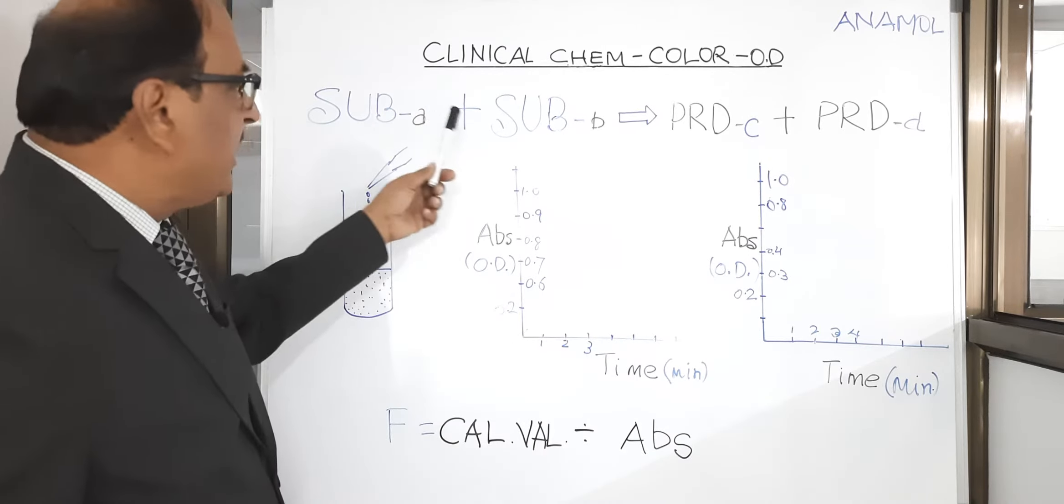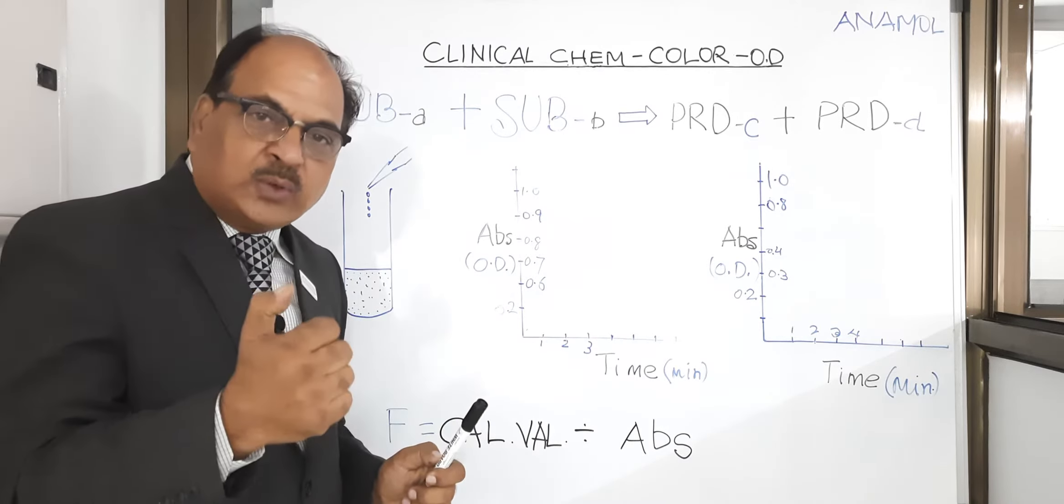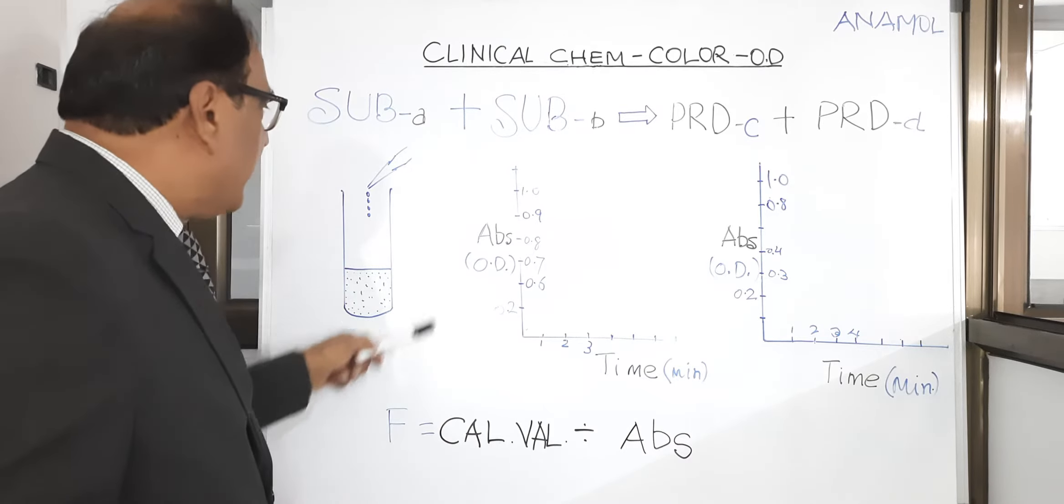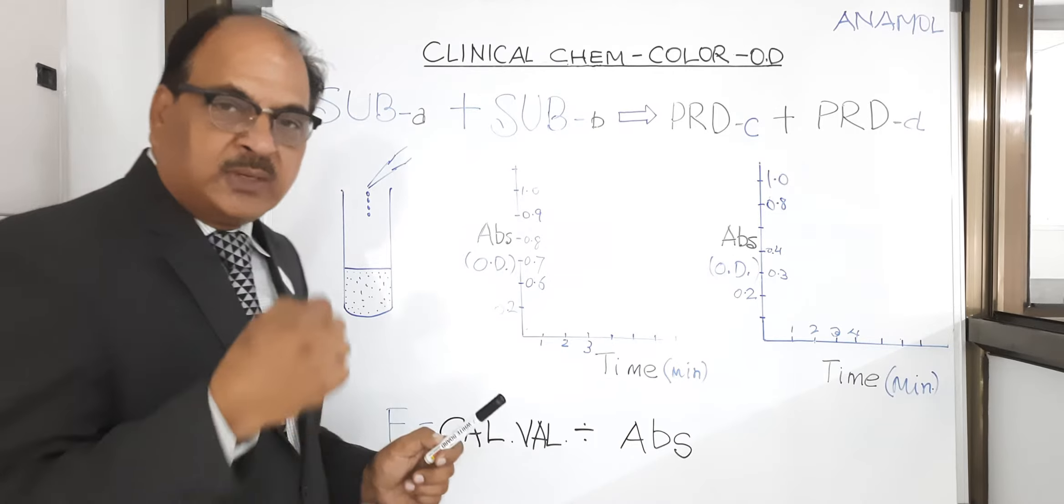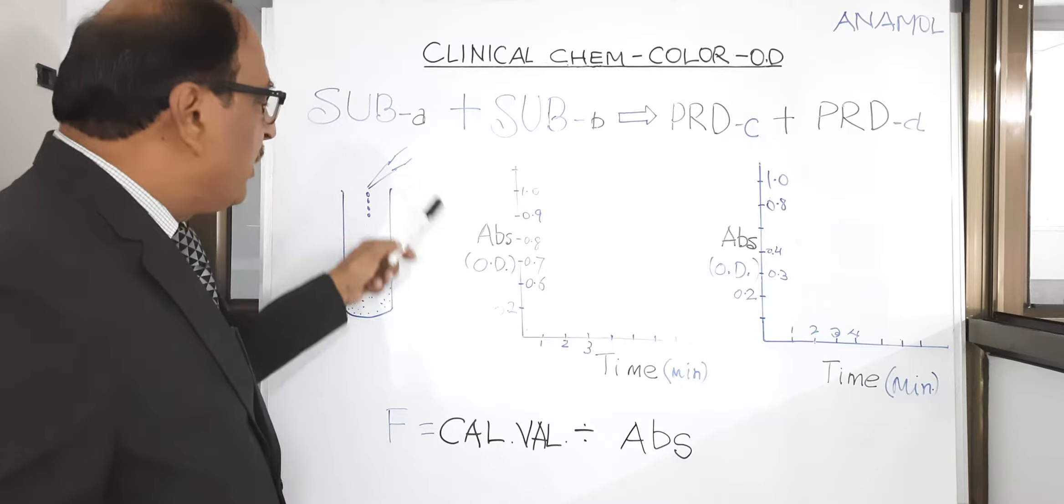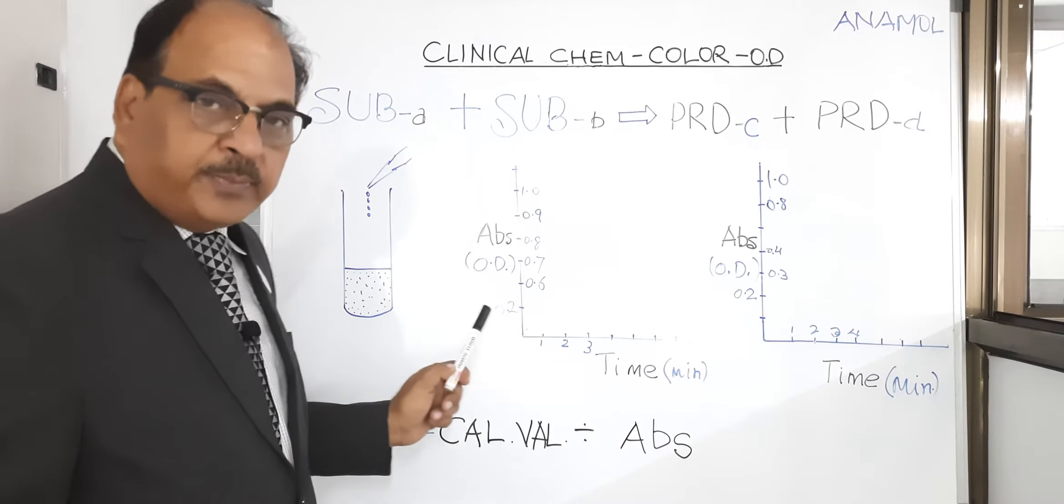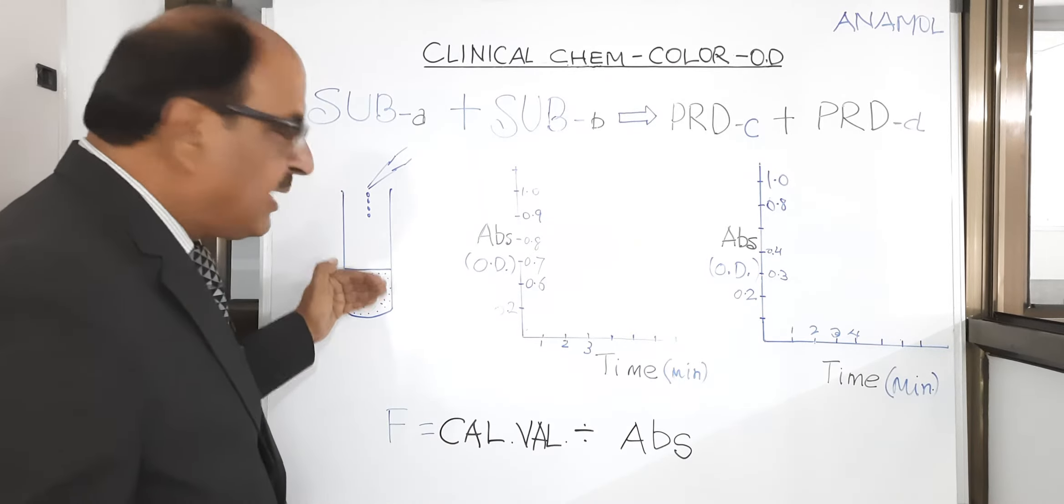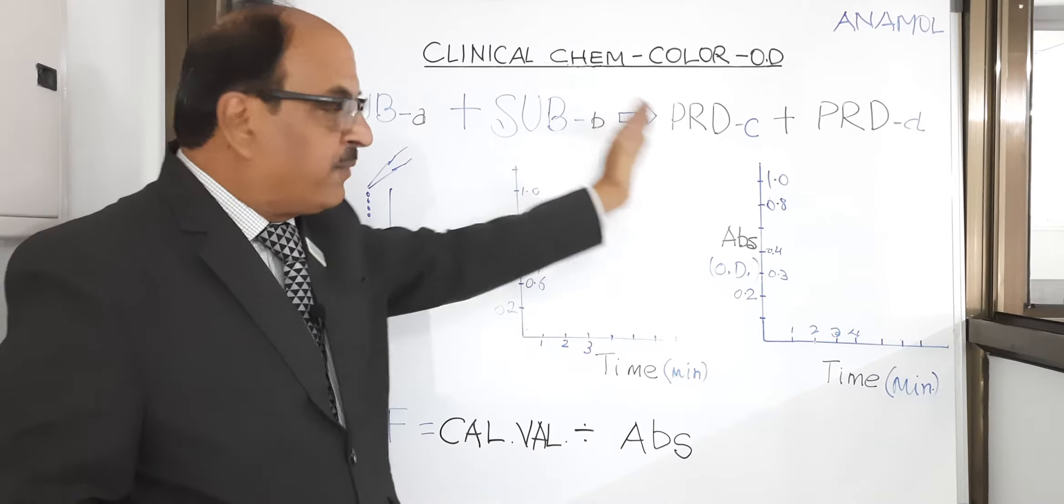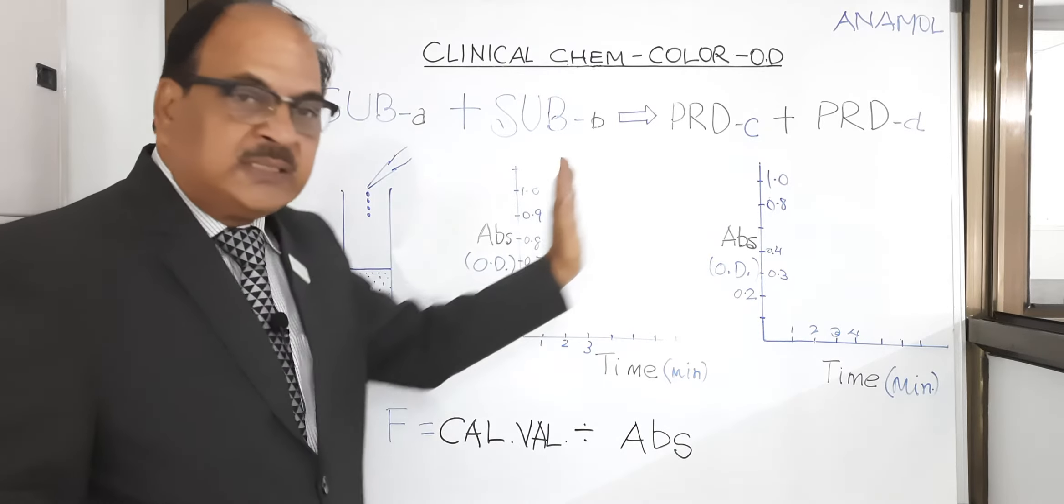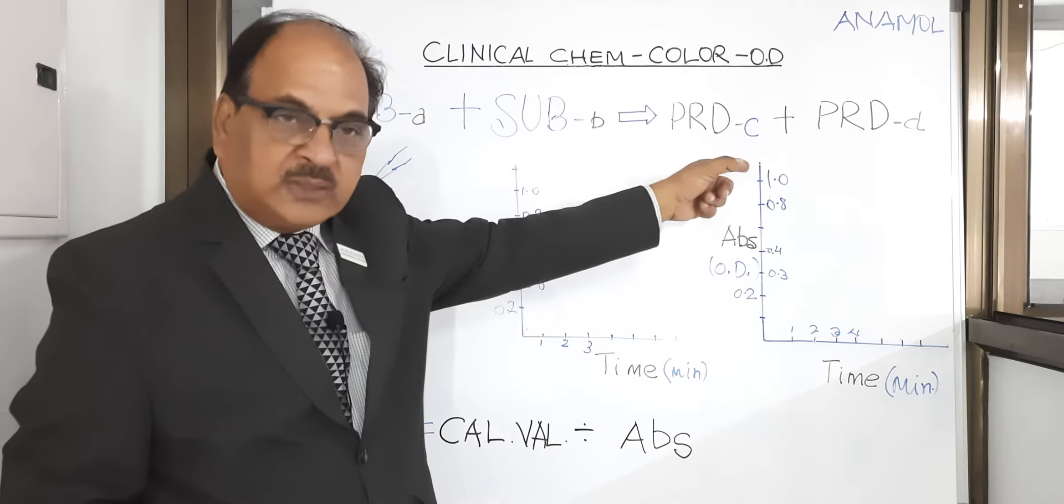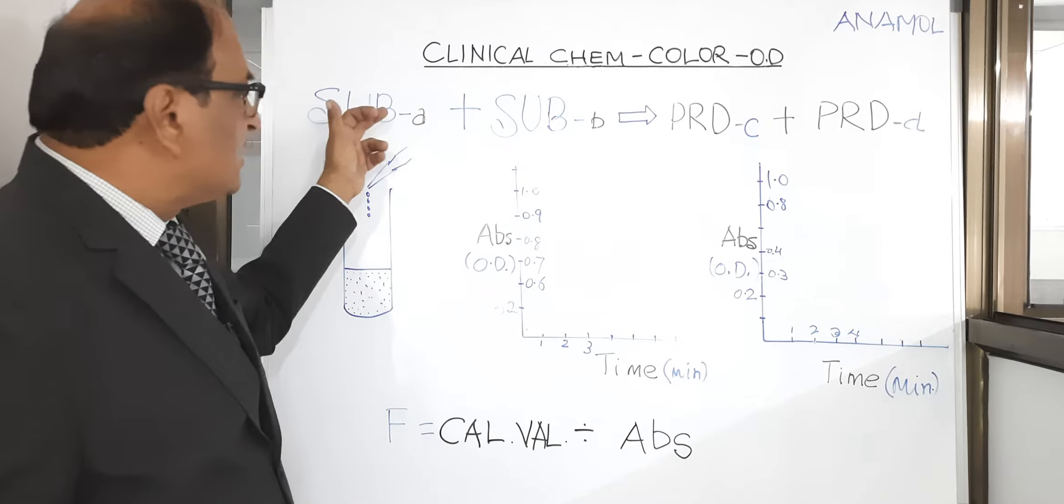You are actually taking working solution or reagent into a test tube and adding few drops or fixed microliters of serum samples or calibrator. The moment you add this in a tube, the color formation either decreases or increases depending upon the type of reaction.